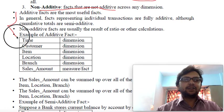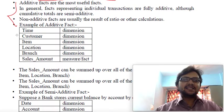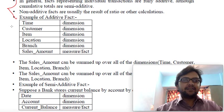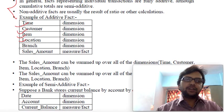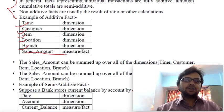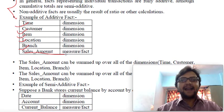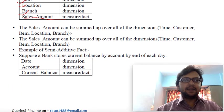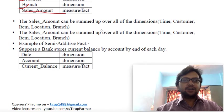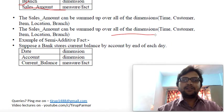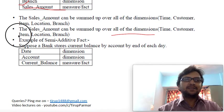For the additive example: at a given point in time, we look at how many customers we have, which type of product or items they are interested in, at what location, in which branch, and what is the total sales amount. The sales amount can be summed up over all dimensions — time, customer, item, and location.